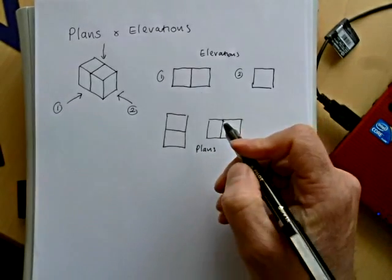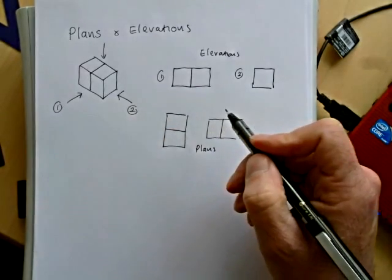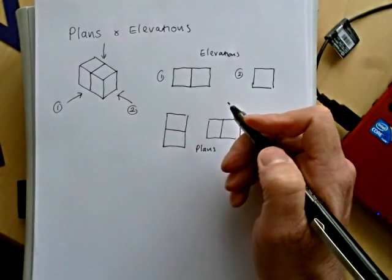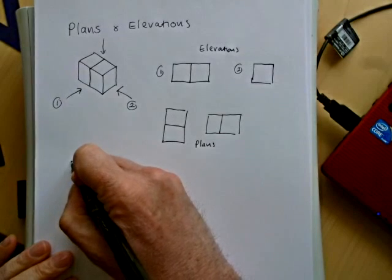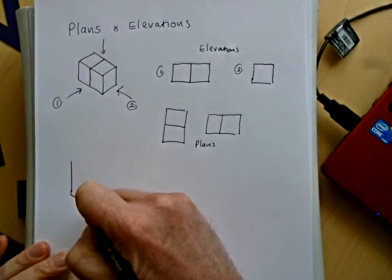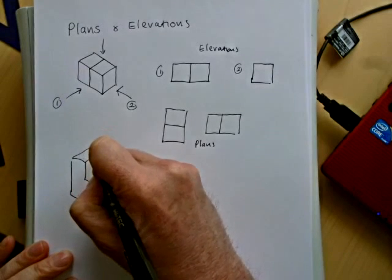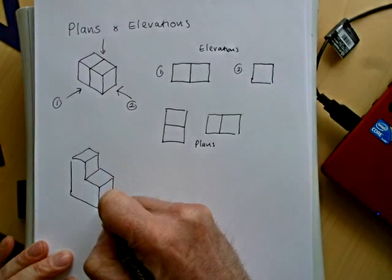Now, you can be given elevations and plans and asked to draw a solid, or you can be given the solid as you were in this particular question and asked to draw the elevations. So we'll do another classic solid that gets shown quite a few times. We'll do this with the L shape, made from three cubes. But this time we won't show the seams.